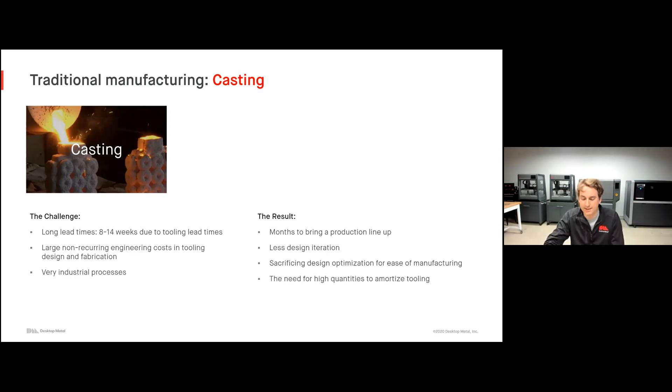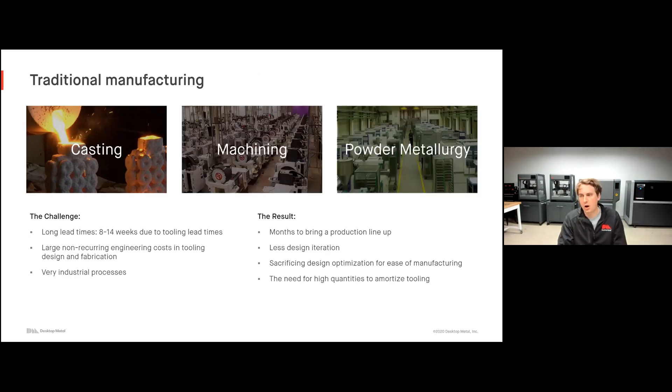What are the results of these challenges? Generally, you're seeing months to bring up a production line from the day the design is approved to the parts are actually being produced. You see lots less design iteration because once a design is finalized, you really can't make any changes to that casting. Otherwise, you're going to have to restart these long lead times associated with tooling. Oftentimes you see people who are sacrificing their design optimization in order to get ease of manufacturing. I commonly refer to this as bending to the will of your manufacturing method where you're more worried about is this going to be able to be cast affordably and efficiently than is this the optimized geometry for my application?